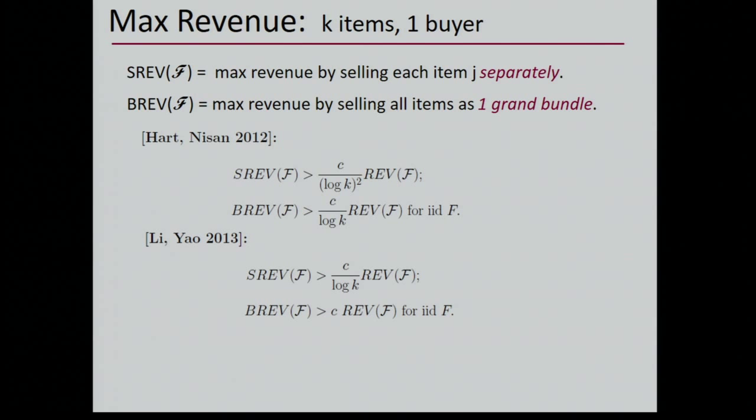They applied structural results to study concrete questions. For example, using simple mechanisms, how far can it be from the optimal revenue? They proved that selling separately achieves at most a factor of log K-squared off. Bundling can be off by at most a log factor if all the distributions are identical. Later it was shown these bounds can be improved: selling separately can be taken to one log factor off, and in the IID case, bundling actually achieves the optimal revenue.